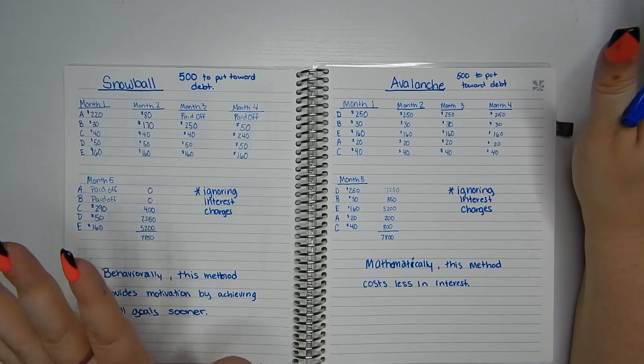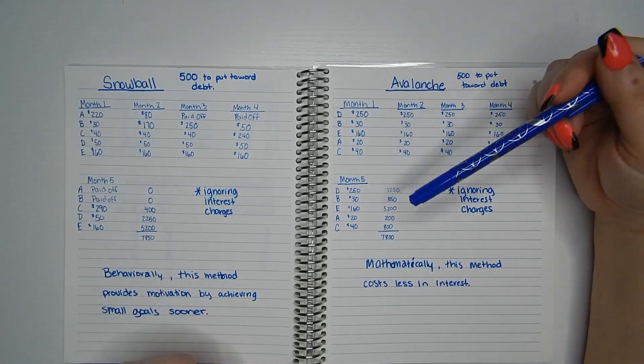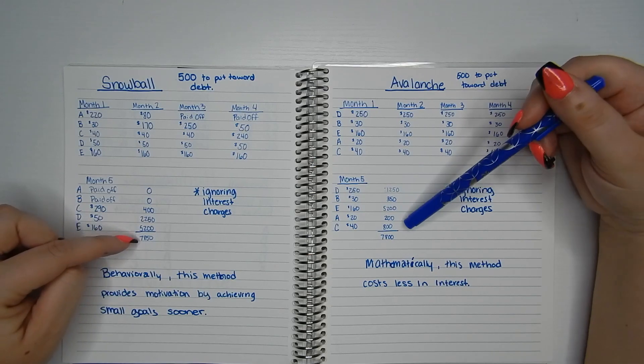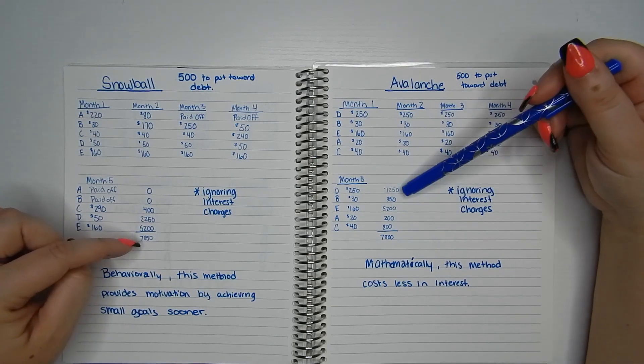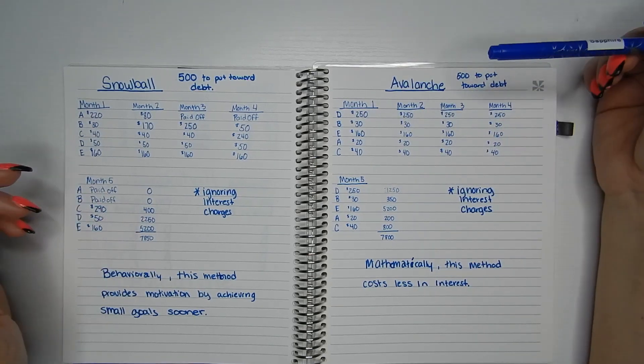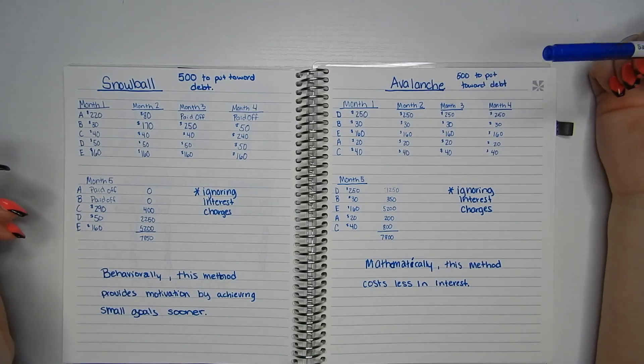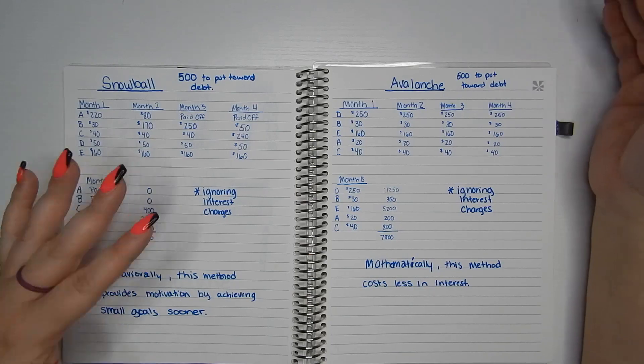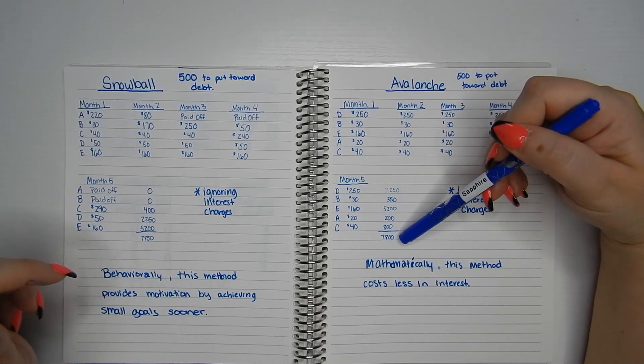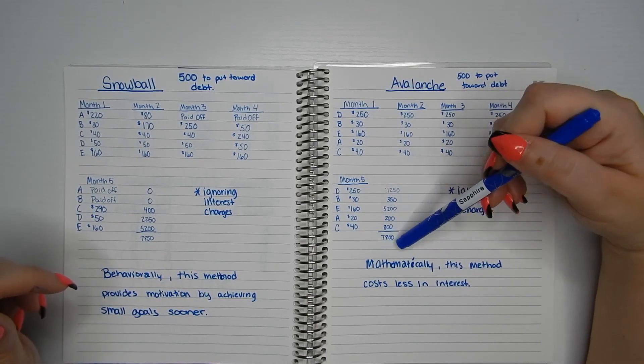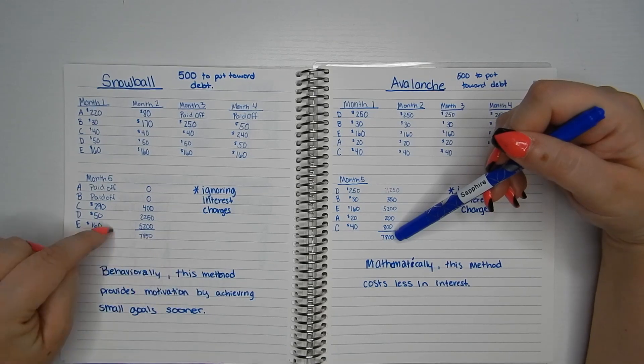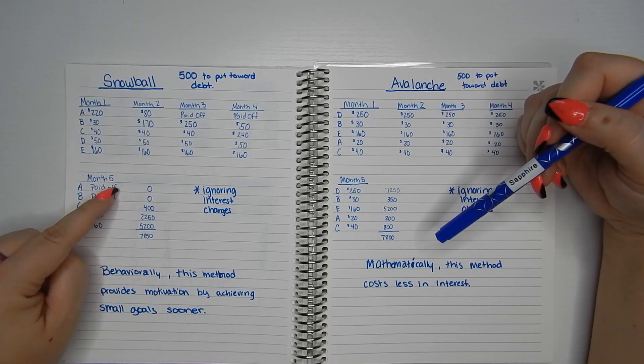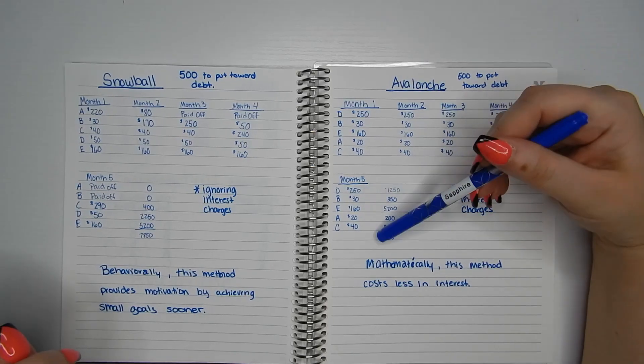And then right here, this little thing that I did, I totaled up what balances you had left. And again, this is ignoring interest charges. Over on avalanche, you would only have $7,800 left. And on snowball, you would still have $7,850 left, but two cards paid off. No cards paid off.